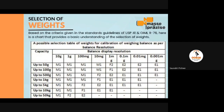These two tests — repeatability and accuracy — are written in USP 41 and must be performed. Now the important question is how to select the weights, or what should be the accuracy class of the test weights to be used while calibrating the weighing balance.